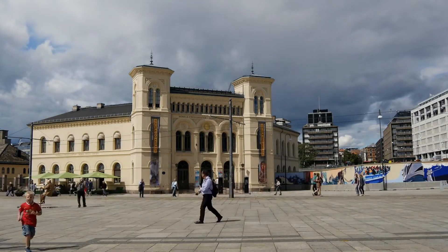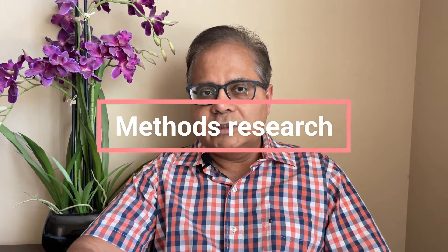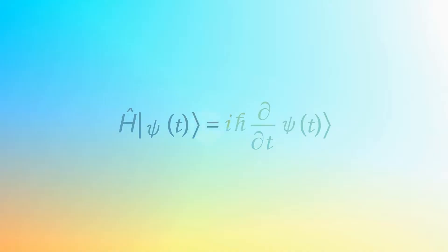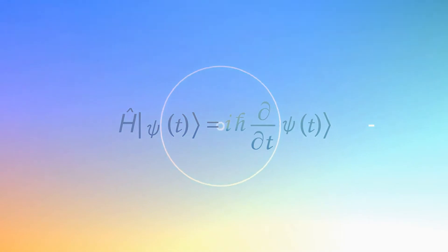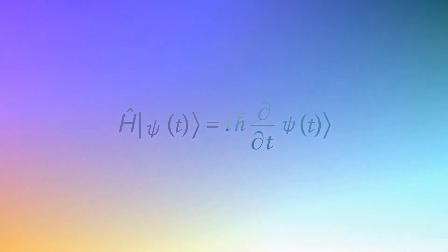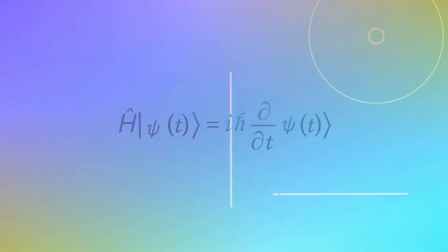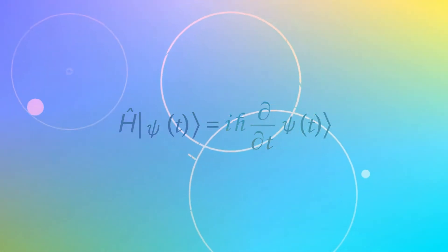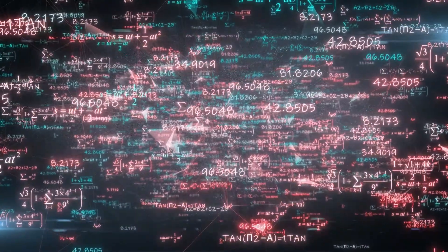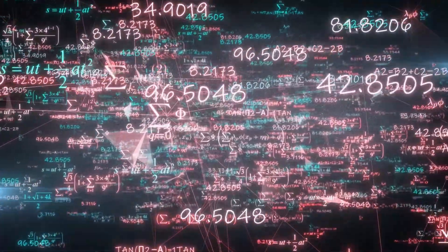The number two type of research is what I call methods research. This is actually what a large amount of the research which happens today essentially is. Methods research could be research developed for solving certain types of partial differential equations or solving some kind of pattern recognition problems. Whenever you are doing methods research, you are essentially trying to solve a problem — the problem is there, and the difficulty lies in solving it. Very often, these difficulties can be conceptual, numerical, experimental, and so on.